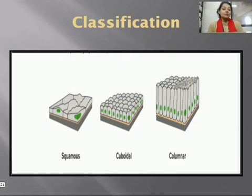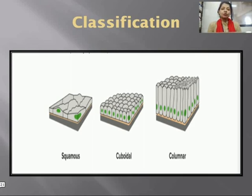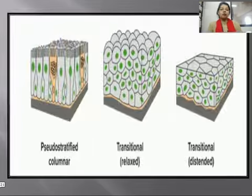As you can see in this diagram, there are three broad classifications based on structure: squamous, cuboidal, and columnar. Squamous cells are flattened; cuboidal cells are cube-shaped; and columnar epithelial cells are columnar-shaped.